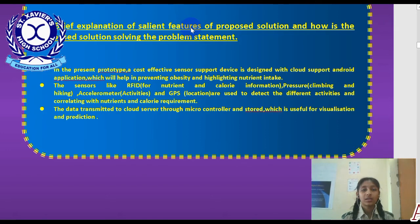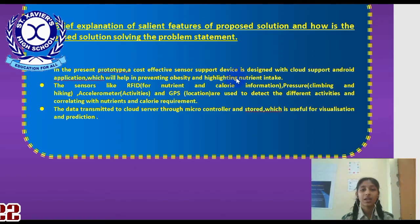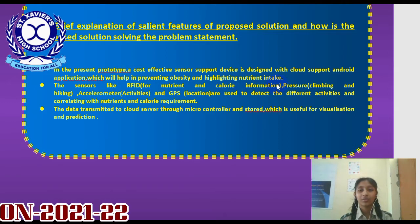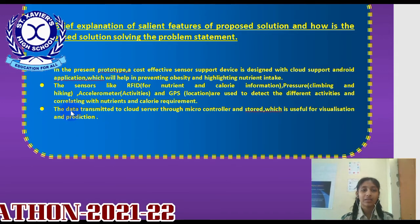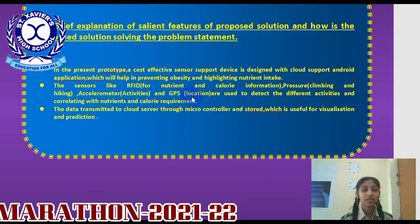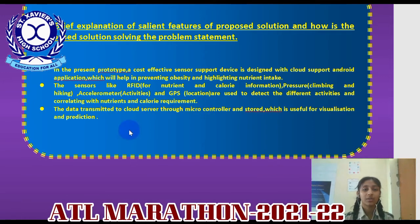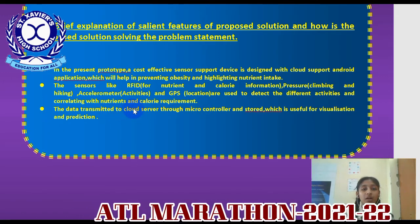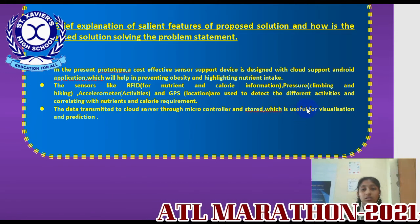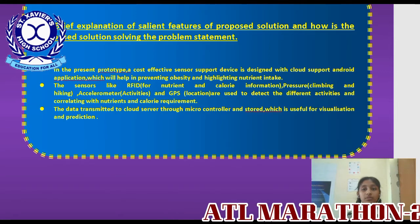Regarding the proposed solution and how it addresses the problem statement: in the present prototype, a cost-effective sensor-supported device is designed with cloud support and an Android application to help in preventing obesity and highlighting nutrient intake. Sensors like RFID for nutrient and calorie information, pressure sensor for climbing and hiking, accelerometer for activities, and GPS location are used to detect different activities and correlate with nutrient and calorie requirements. Data is transmitted to a cloud server through a microcontroller and stored for visualization and prediction.